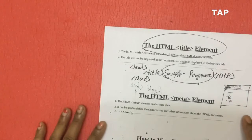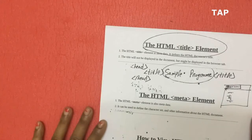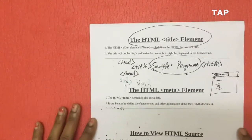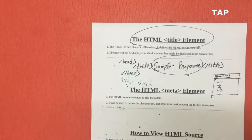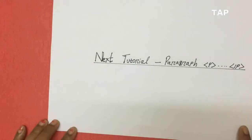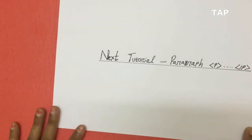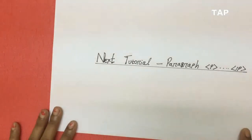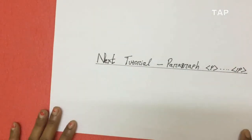So today we learned about the head tag, heading tags, HR tag, and the title tag. In my next tutorial I will tell you about an important tag — the paragraph tag, the p tag. If you like our video, please subscribe to our channel, and don't forget to watch my next tutorial about paragraphs. Thank you.